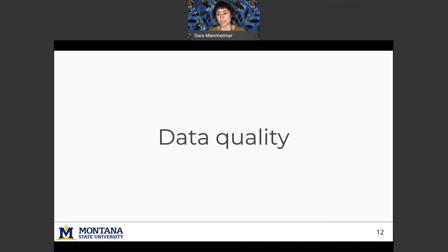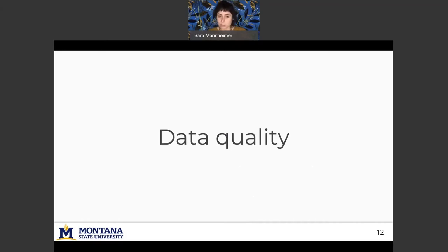So the sampling that qualitative researchers would do may not apply here. And then for both types of data, systematic errors can be introduced as a result of bias. And when researchers reuse qualitative data or combine data sets, these errors can compound.